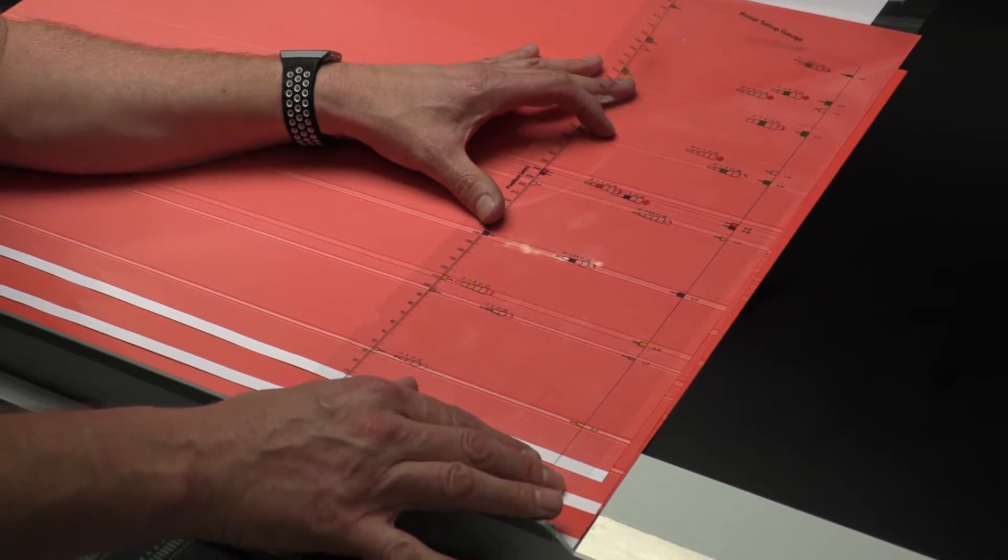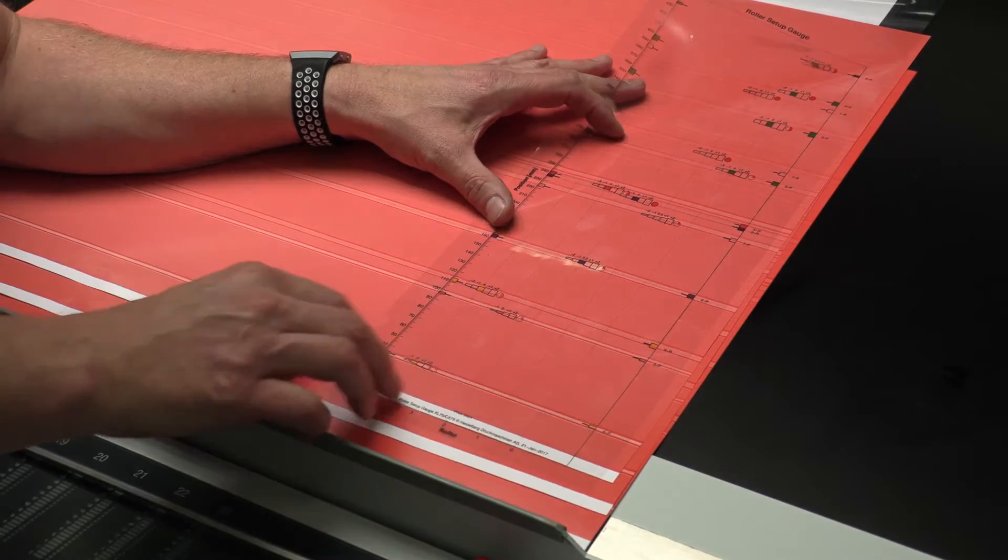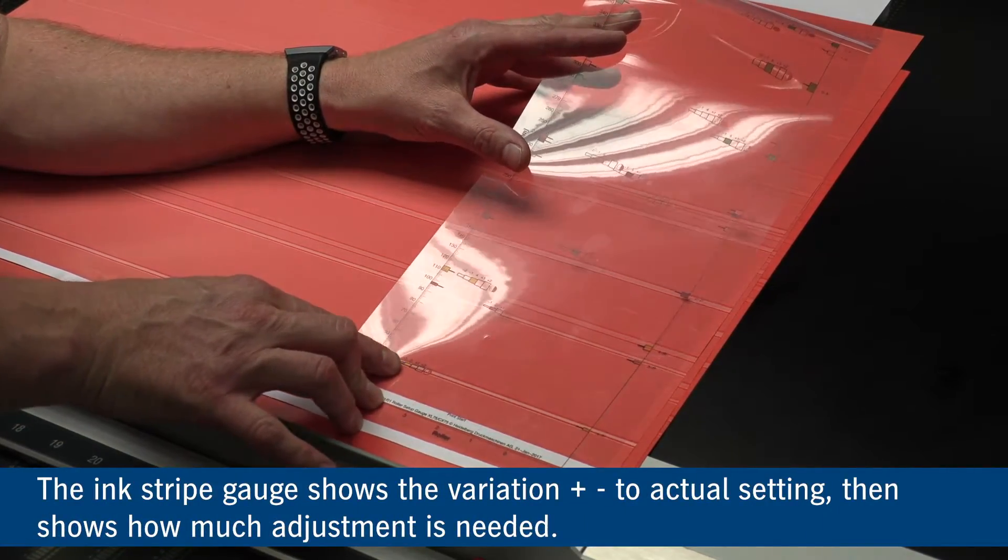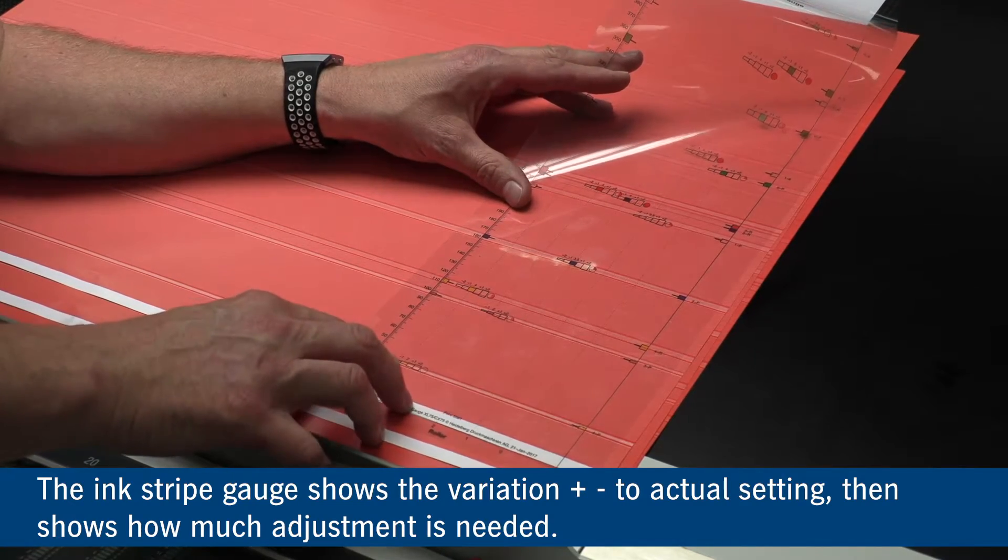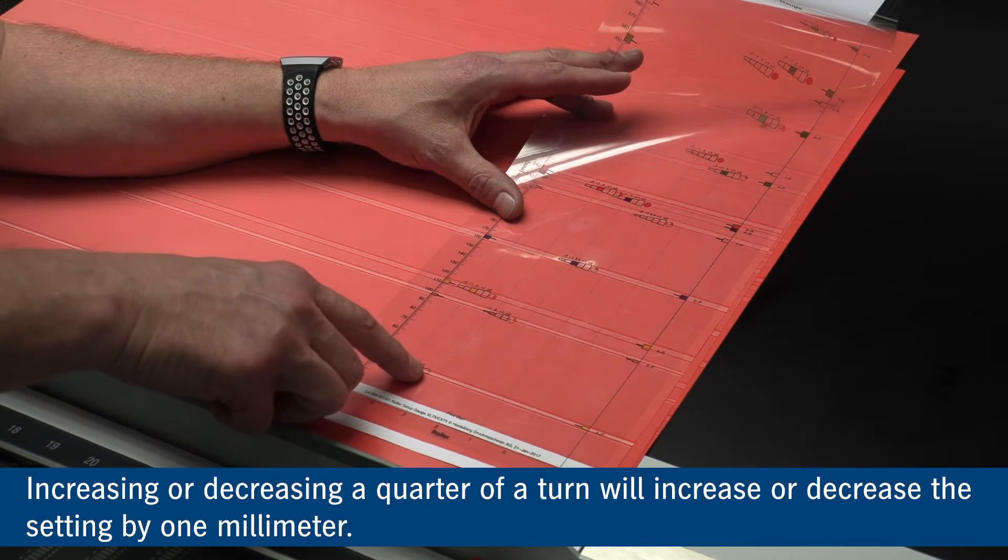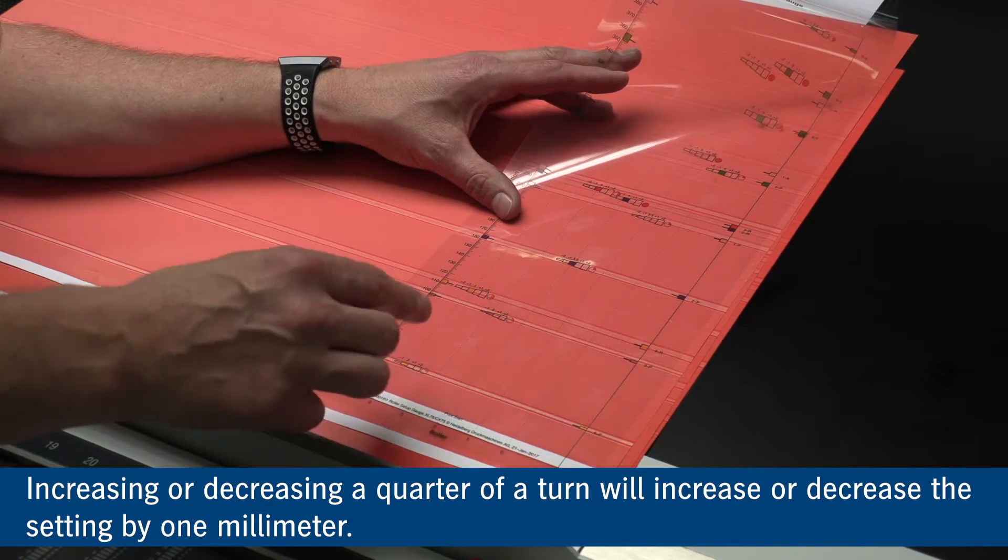Once we set the mylar down we can see that our strip is near enough perfect. On the left hand side of the gauge we can see the measurement at this point. 4 to the plate is 2mm. Increasing it or decreasing it a quarter of a turn will increase or decrease it 1mm.